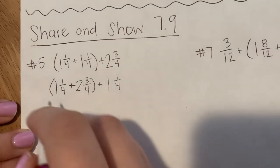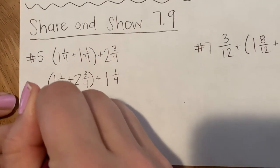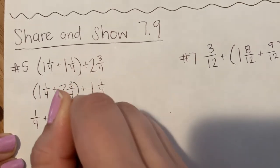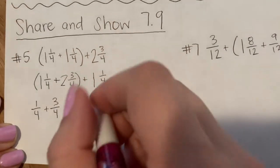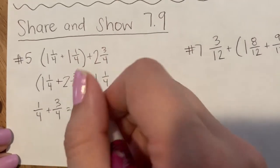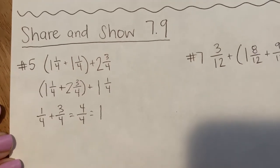So now I'm going to add my fractions first. So 1 fourth plus 3 fourths equals 4 fourths. We know that same top and same bottom, same denominator and numerator, that's going to get me one whole.